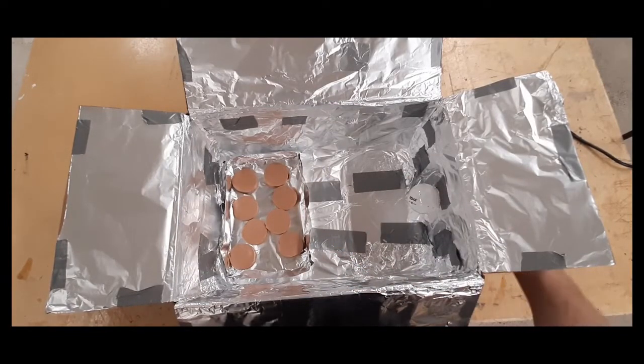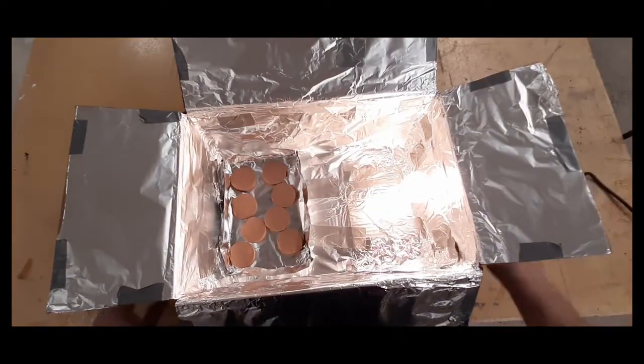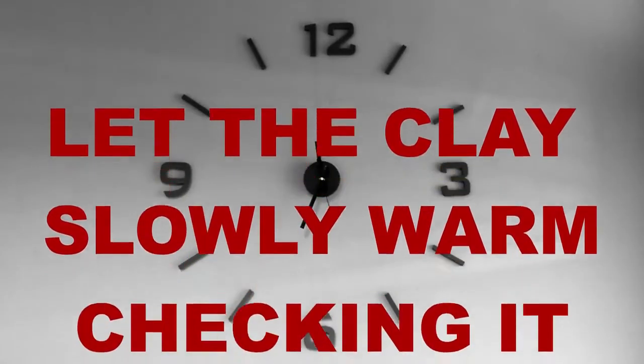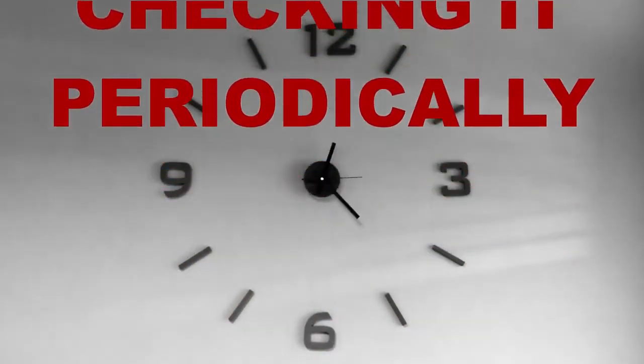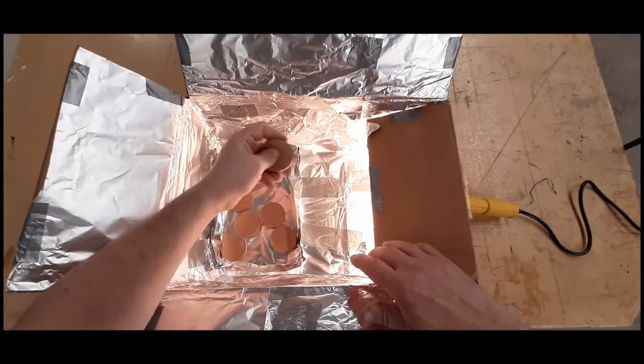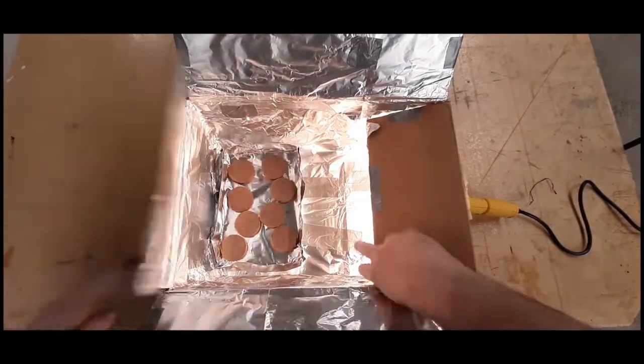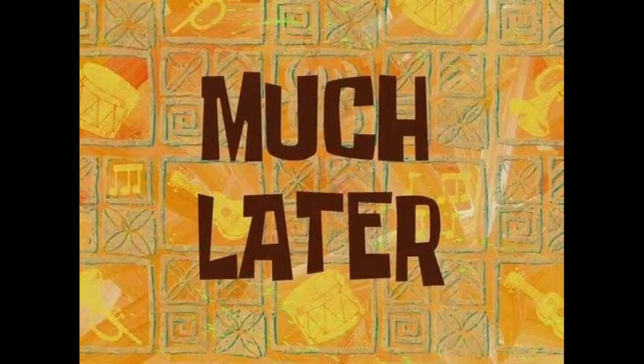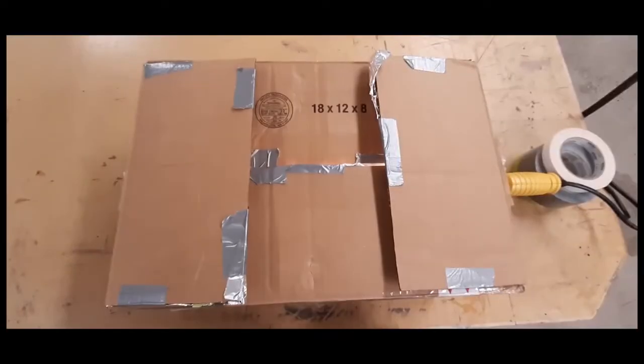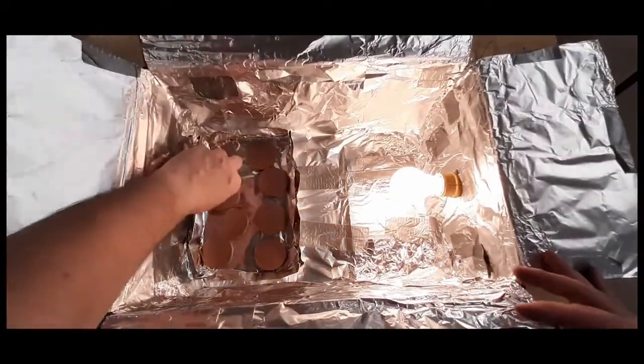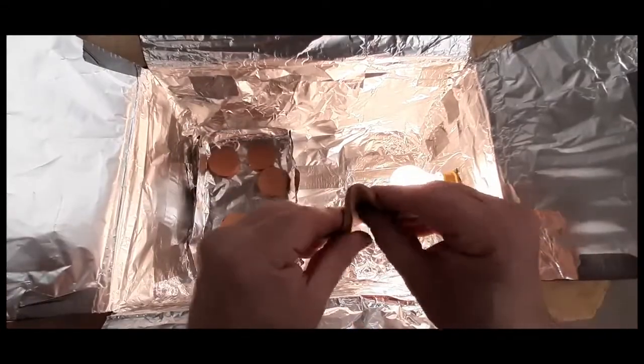Once you have placed enough clay in the box, turn on the bulb and close up the box and wait. I did my first check after about 10 minutes. It was still very stiff and not very usable so I put it back in the oven and waited. The bulb I used in my oven is a 43 watt bulb and it took about 30 minutes to heat it up to a usable state.